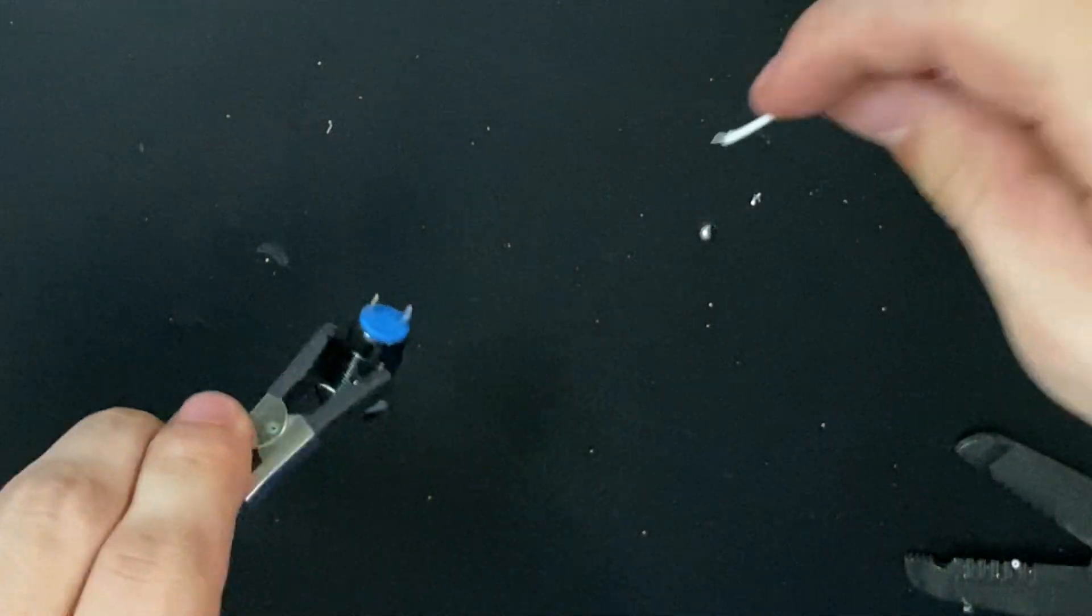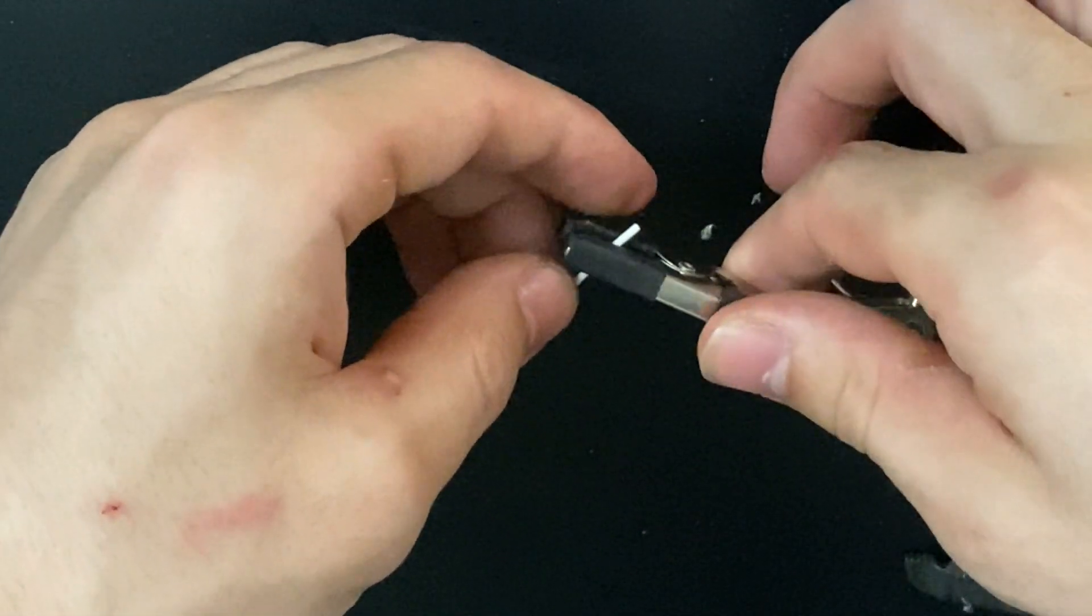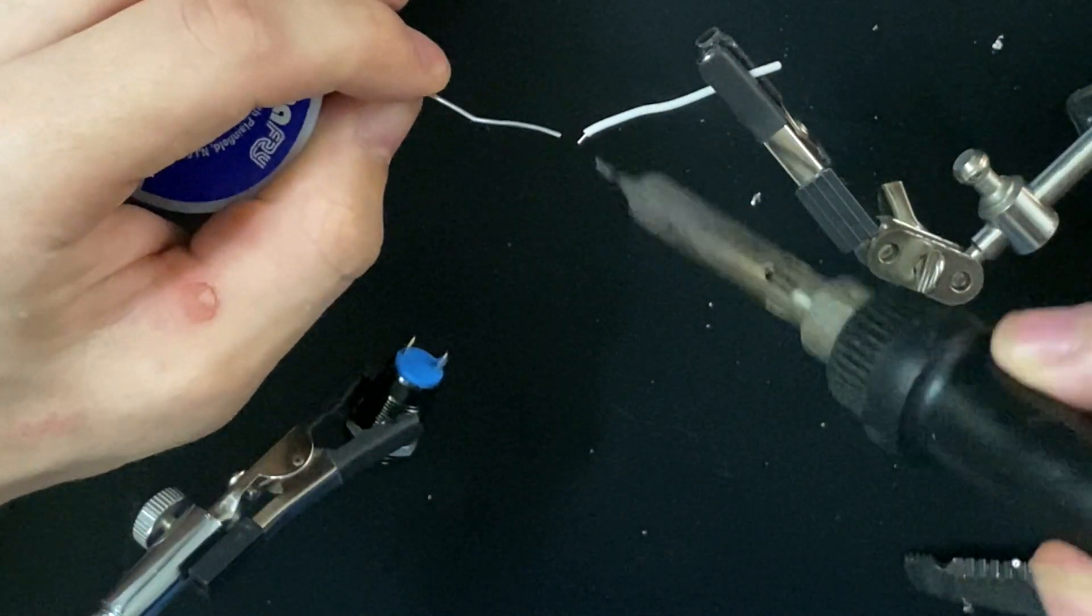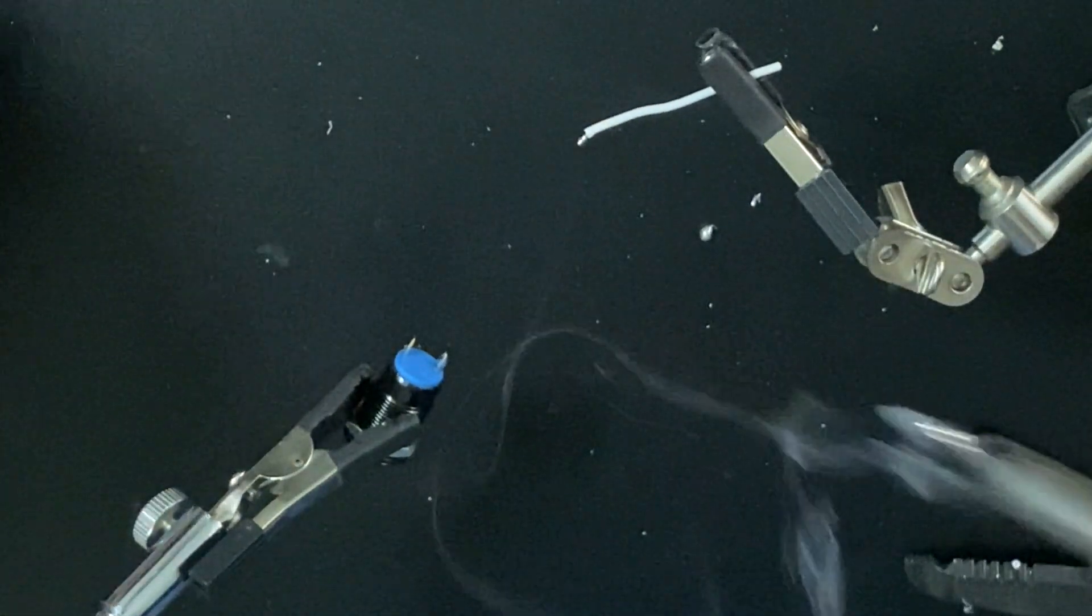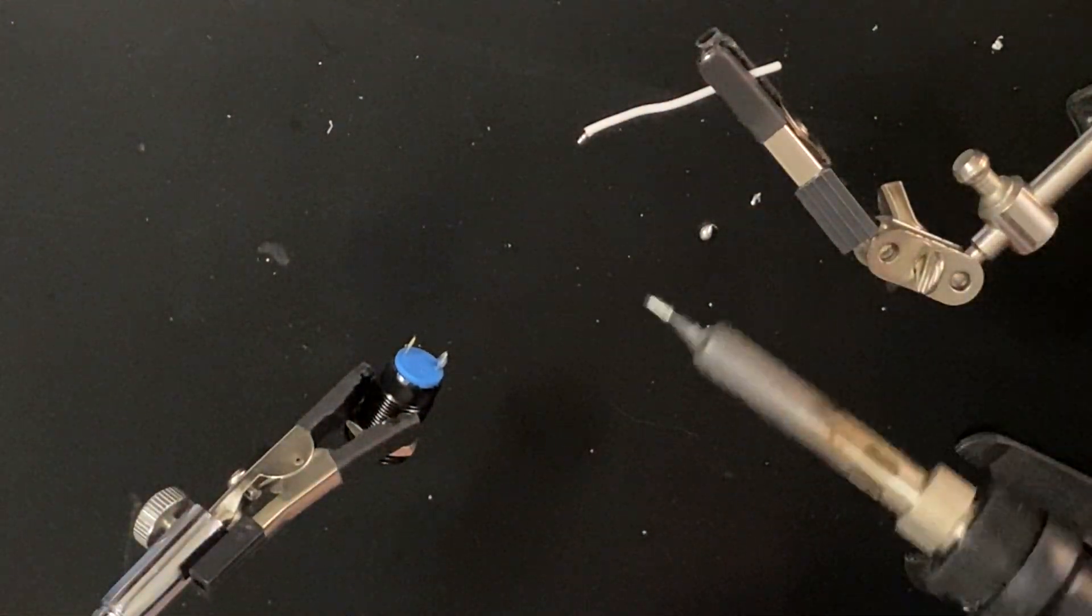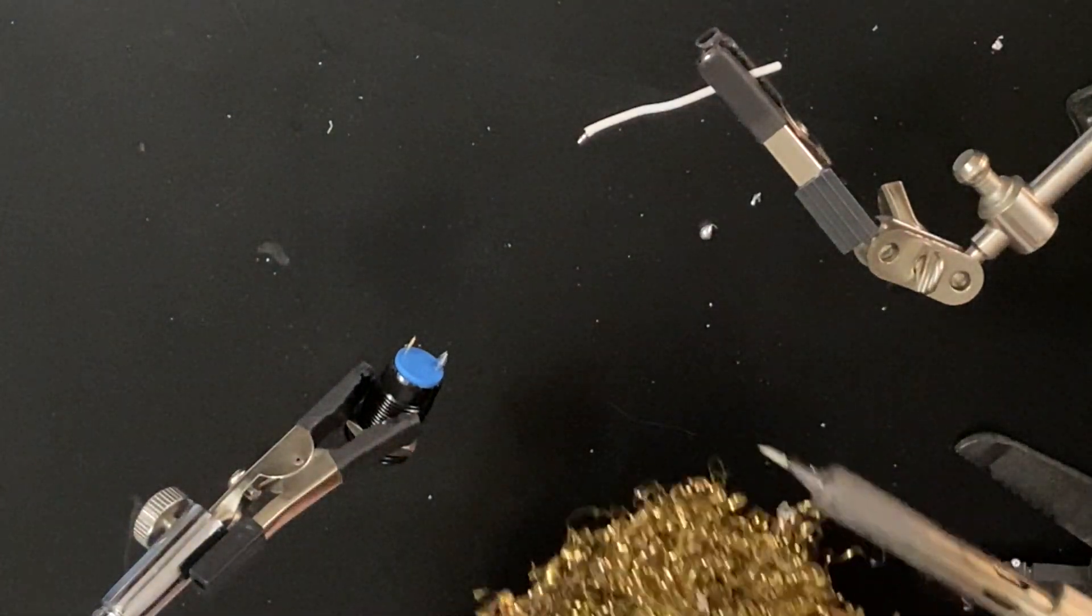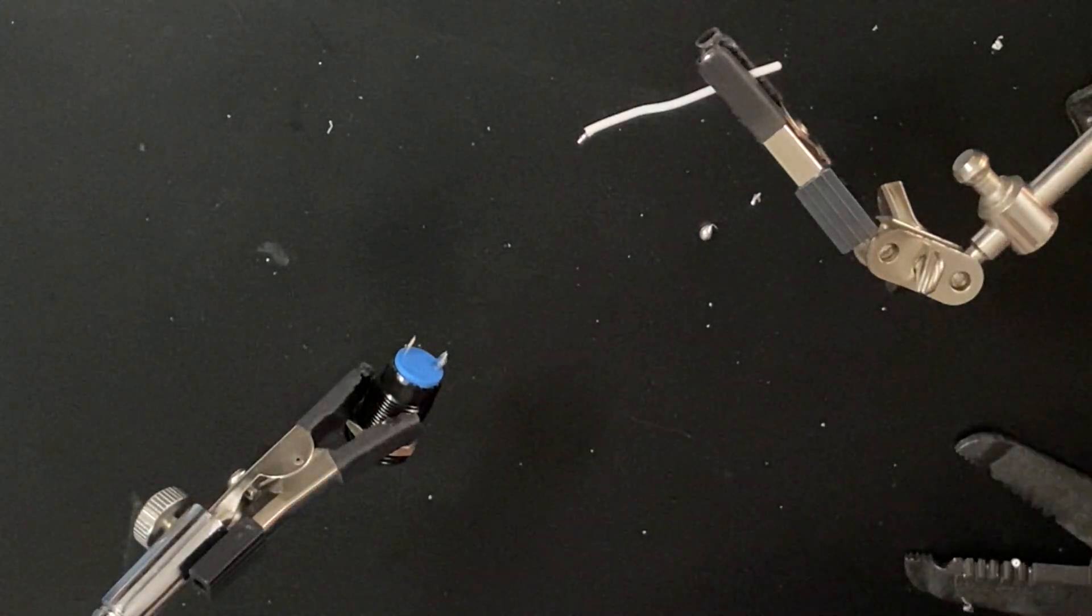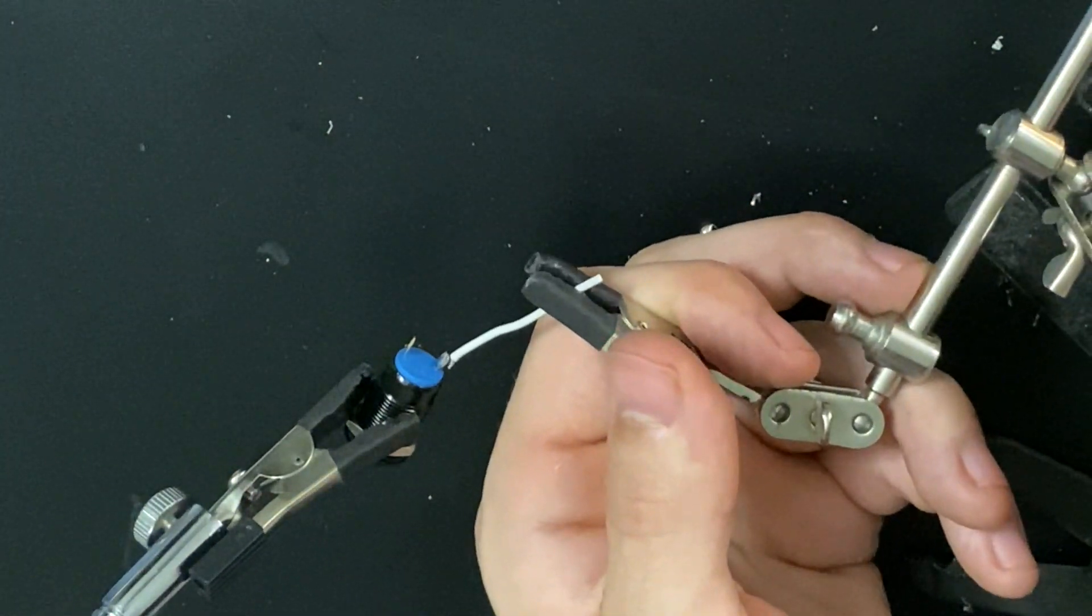And then to solder to the switch tab, again if you have two sets of helping hands that's going to be ideal. First you're going to pre-tin your wire like always. So just as a general rule you always want to pre-tin your wire and pre-tin what you're soldering your wire to. You always want to make sure between solders that your iron is nice and clean. Because if your iron is clean you'll make clean joints and the joints will last longer.